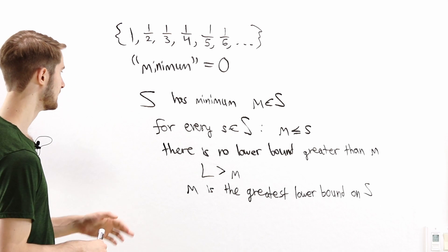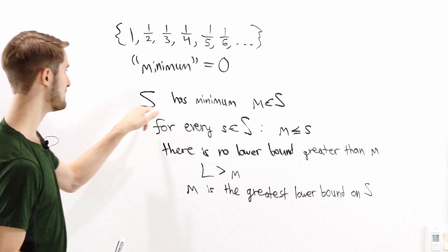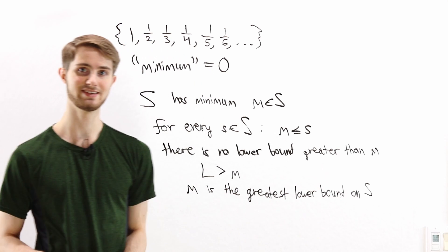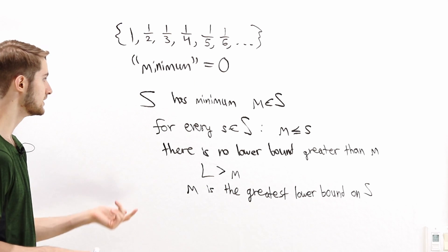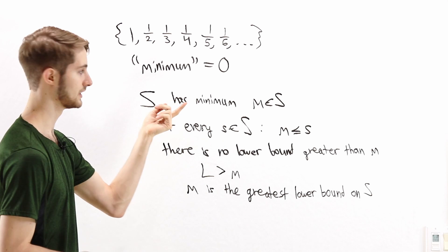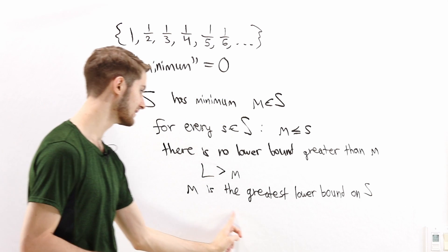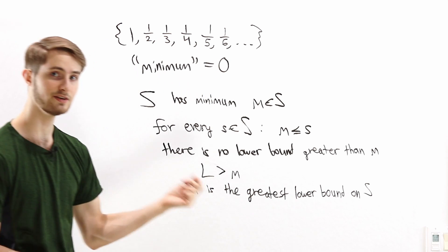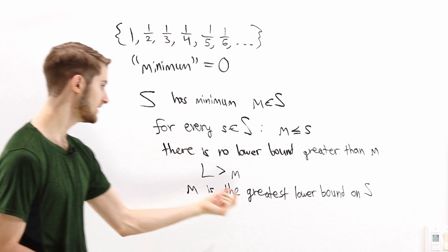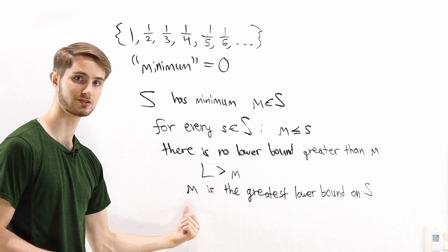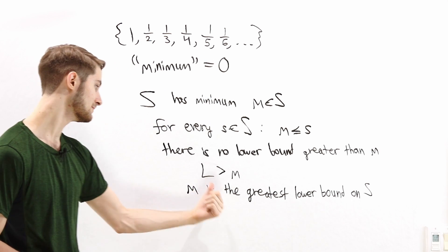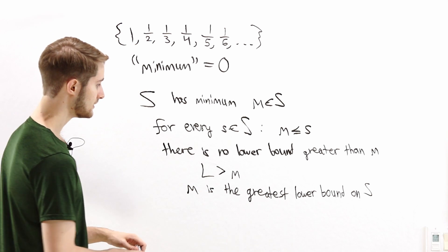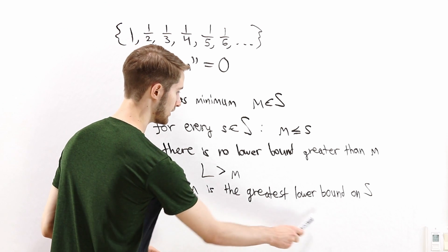So M is the greatest lower bound on S. We've now proved that if a set S has some minimum element M, then M is the greatest lower bound on that set S. But what if we don't have a minimum? Well, instead of talking about the minimum, we can look at the greatest lower bound. Because if there's a minimum, then finding the greatest lower bound will always give us the correct answer. But if there's no minimum, then sometimes there will still be a greatest lower bound.